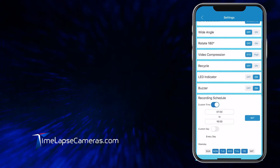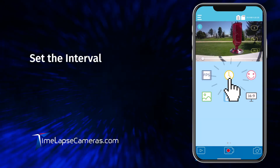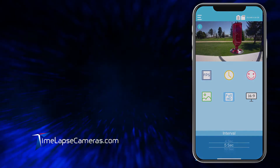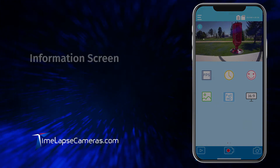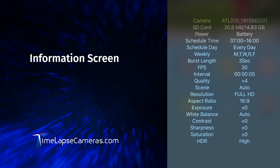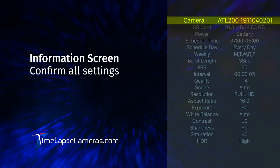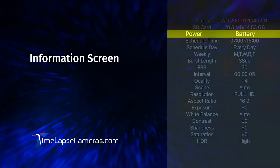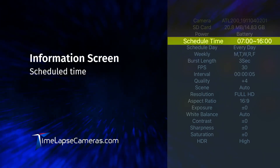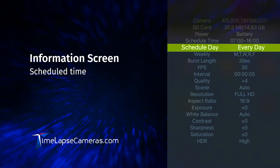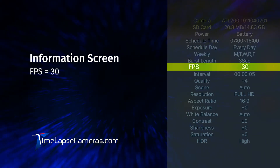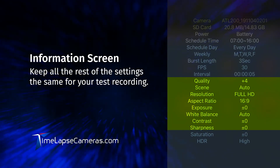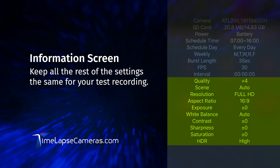We don't change any of these other settings because there's no need to at this time. For the interval, I'm fine with doing a five-second interval — or ten or three, whatever you like — because we're just going to get you started. Let's go with five. Take a look at the information screen — here is where you can confirm all your settings: camera number, SD card capacity, what is used out of the total available, power status from the battery, scheduled recording time, recording Monday through Friday, frames per second at 30, interval set to five, and all the rest — quality, scene, resolution, aspect ratio, white balance, contrast, sharpness, saturation, and HDR — all set to the settings we prefer at Time-lapse Cameras.